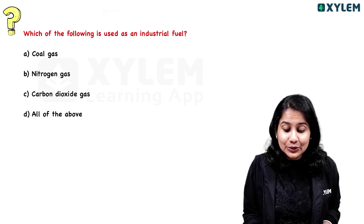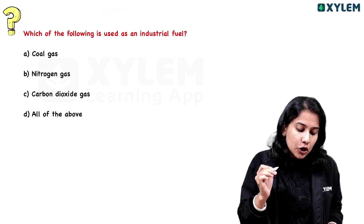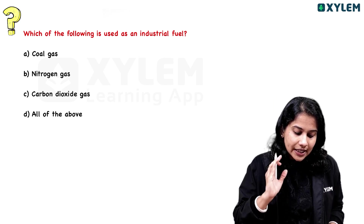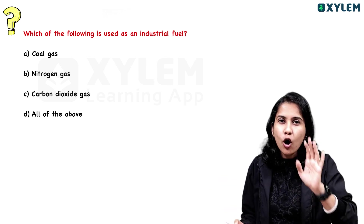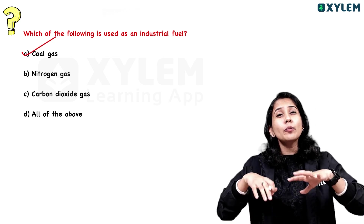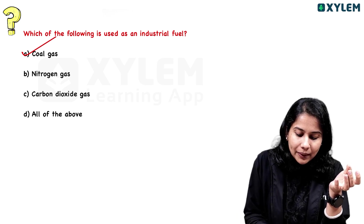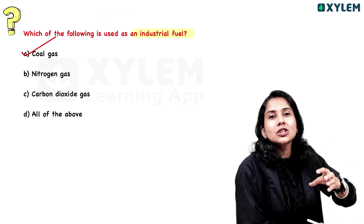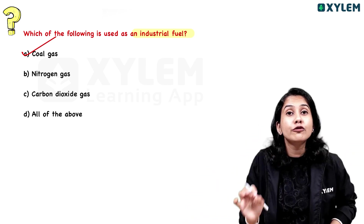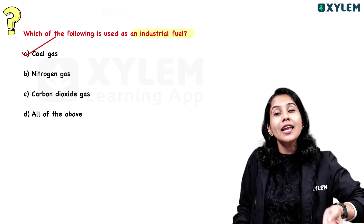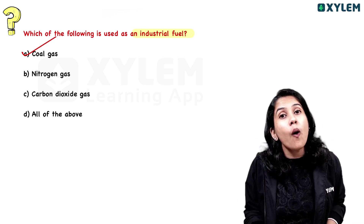Which of the following is used as an industrial fuel? The options are: Coal gas, Nitrogen gas, Carbon dioxide, All of the above. The answer is Coal gas. Coal gas is used in the industry as an industrial fuel — that is the correct answer.